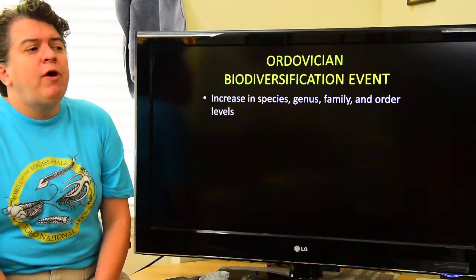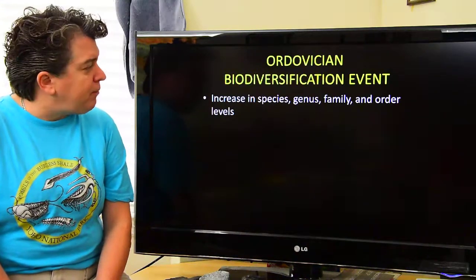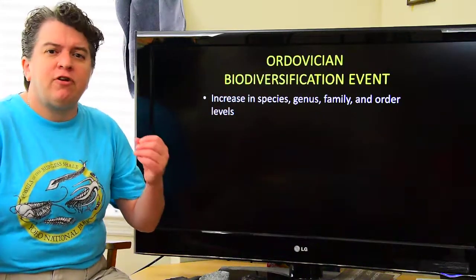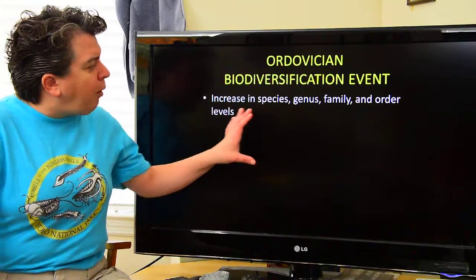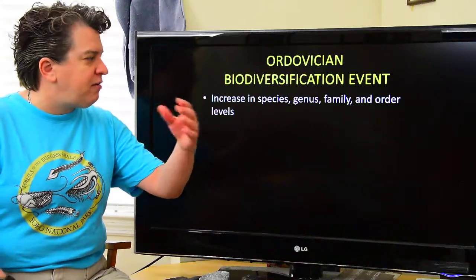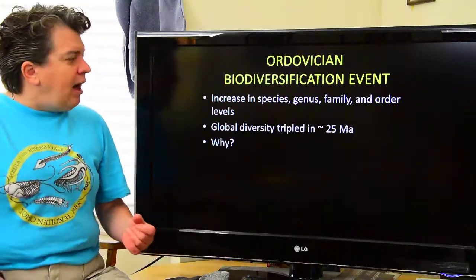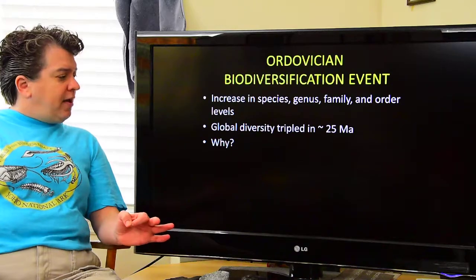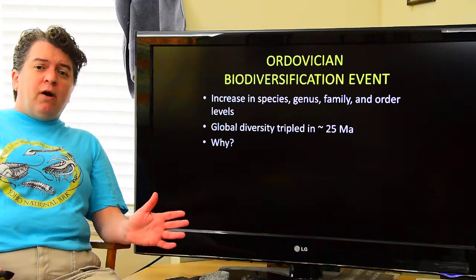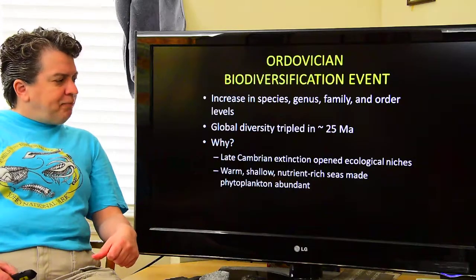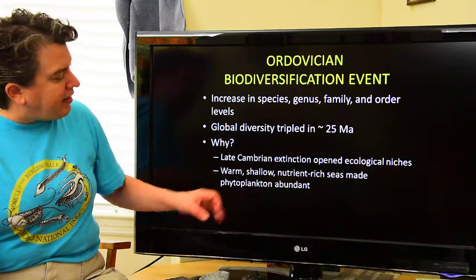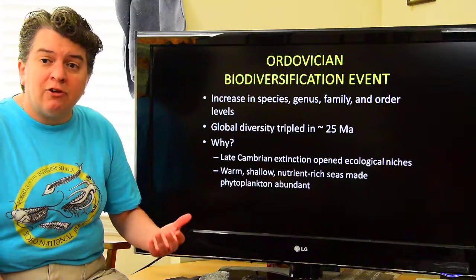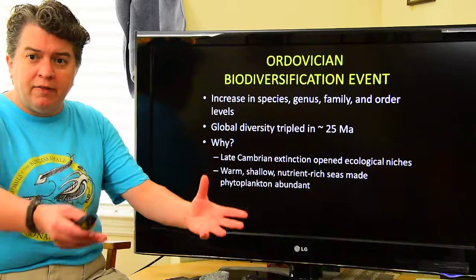When we leave the Cambrian and enter the Ordovician, life really diversifies. We call this the Ordovician biodiversification event, and we see a major increase at the species, genus, family, and order levels. In fact, global diversity tripled in about 25 million years during this event, which leaves paleontologists wondering why. Well, there was a small extinction event in the late Cambrian, and that extinction event might have opened ecological niches for new organisms to diversify and then occupy.